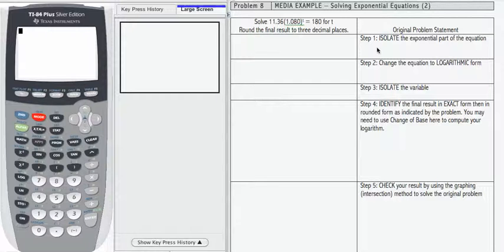Step 1 says that we need to isolate that. So we're going to divide both sides by 11.36. And when we do that, we're going to get 1.080 to the t, so there's the exponential part, equals 180 over 11.36.